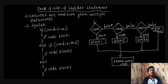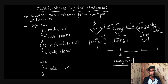So how do we say this in the syntax? If open brace close brace, condition satisfies this code block — which means code block 1. If condition 2 is satisfied, execute condition 2. If condition 2 is true, then we will execute this block which is code block 2.